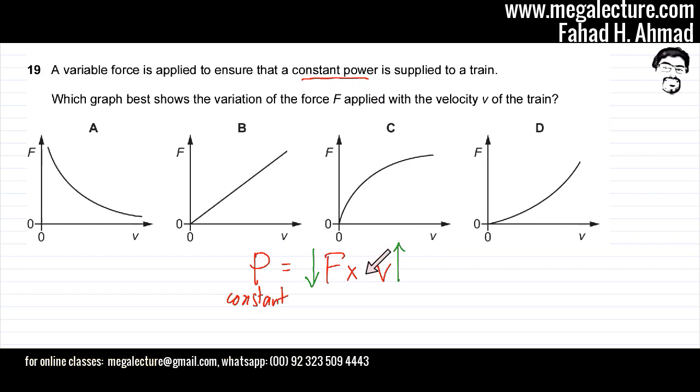If you look at graph A, the relationship between force and velocity is an inverse relationship. As velocity increases, force decreases. The graph would look like option A, where you keep increasing velocity and the force applied must keep decreasing.